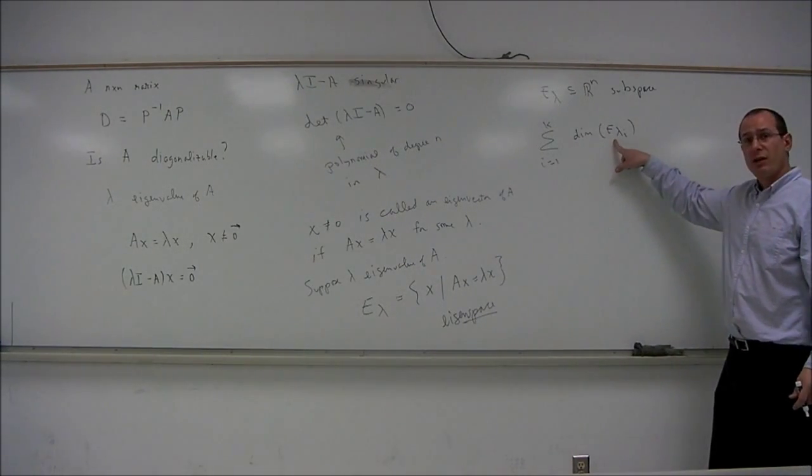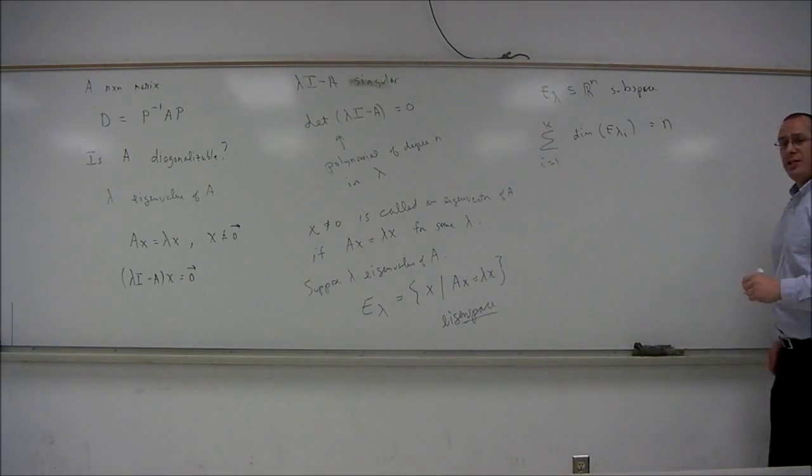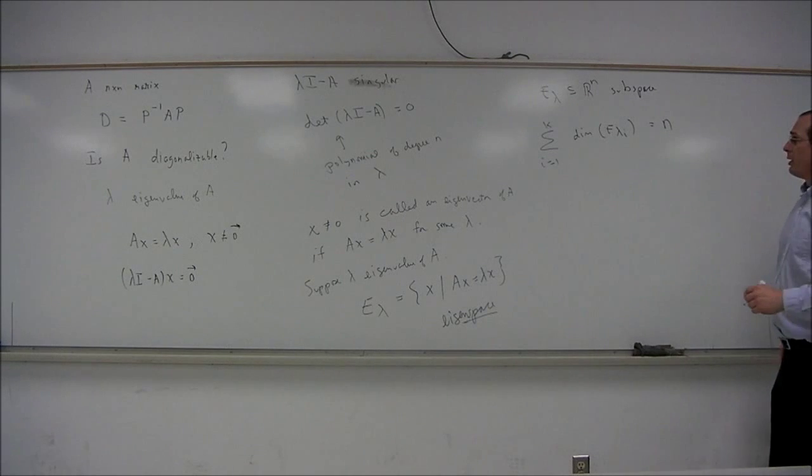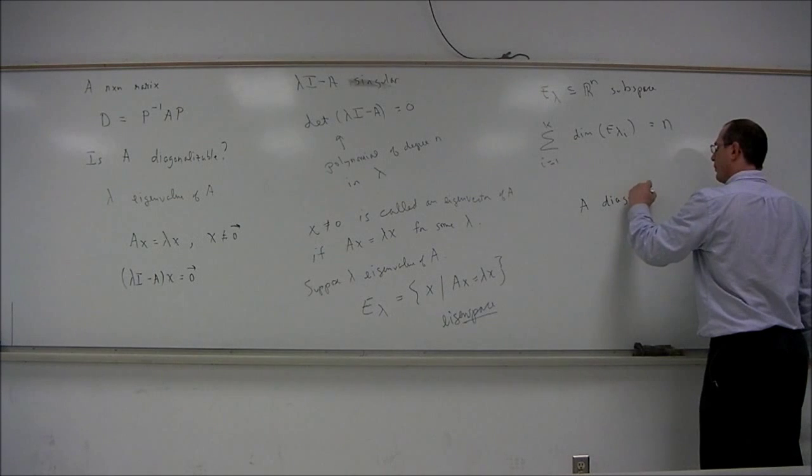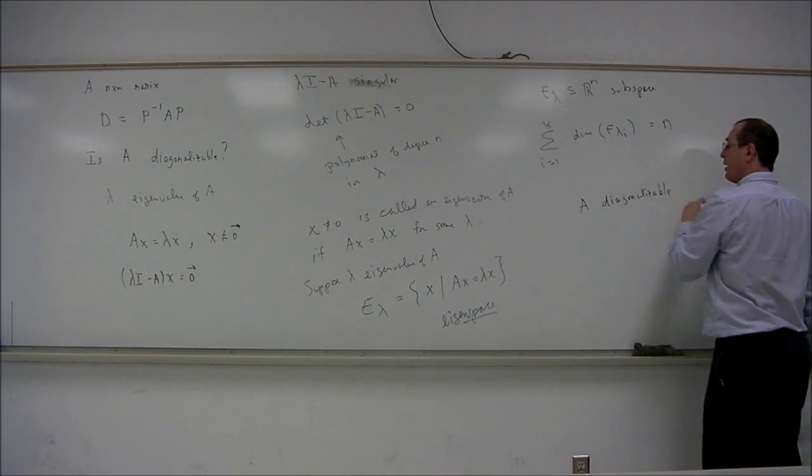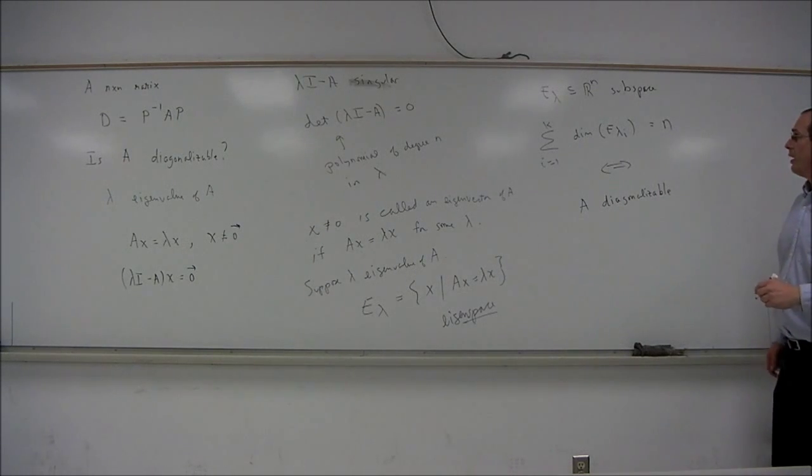If we add the dimensions of all of the corresponding eigenspaces, then we should get the size of the matrix N. So A is diagonalizable if and only if the sum of the dimensions of the eigenspaces is N.